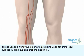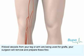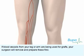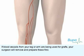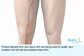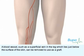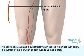If blood vessels from your leg or arm are being used for grafts, your surgeon will remove and prepare these first. A blood vessel, such as a superficial vein in the leg, which lies just below the surface of the skin, can be removed to use as a graft.